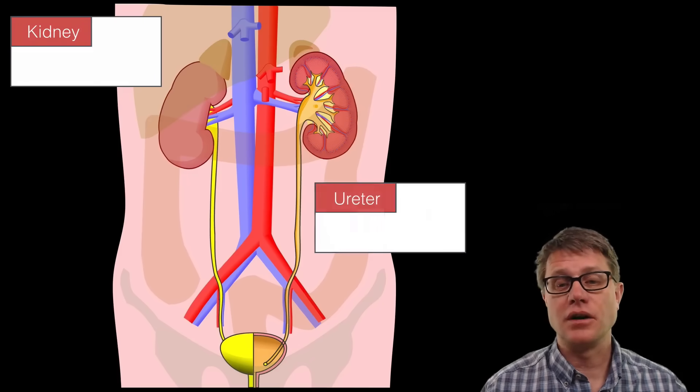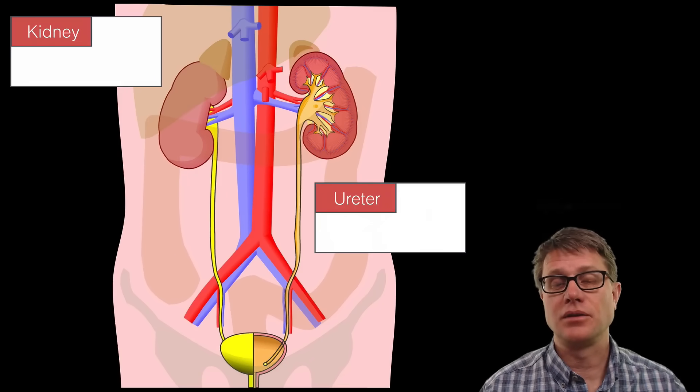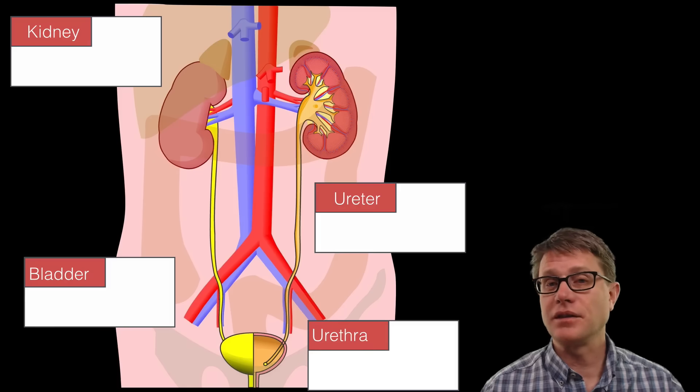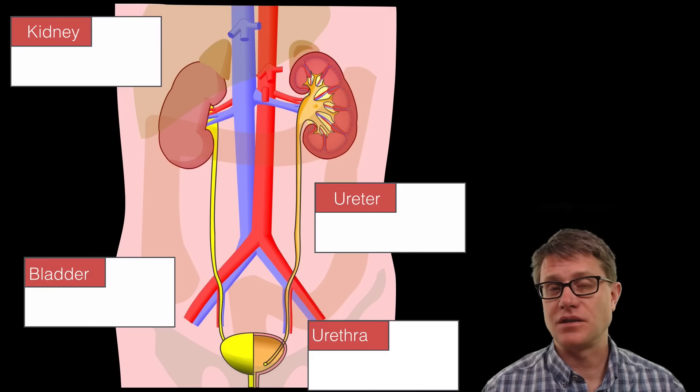In addition to the kidneys, we also have other parts of the urinary system including the ureter, the bladder, and the urethra. In males and females, the urinary system is essentially identical except for the length of the urethra itself.